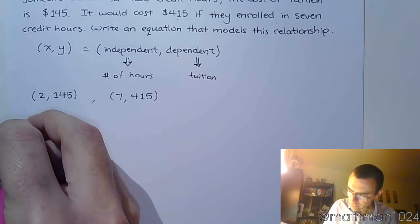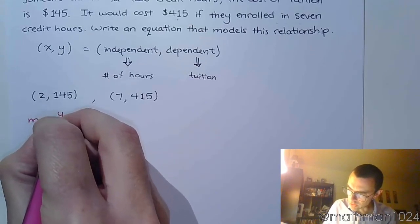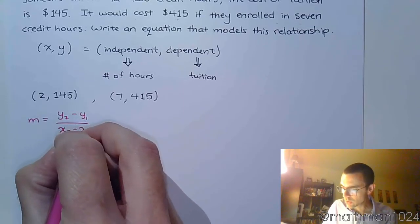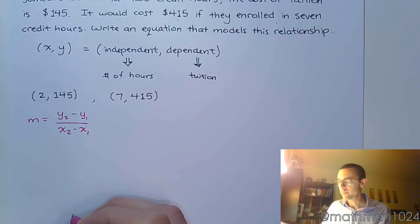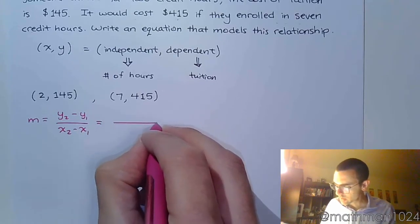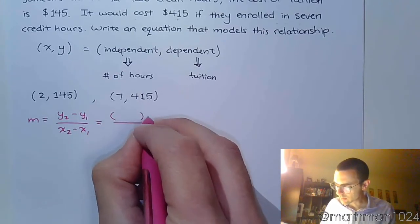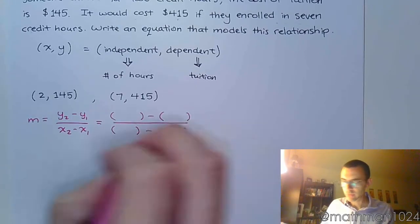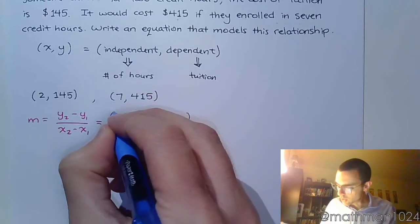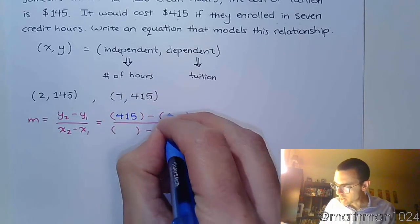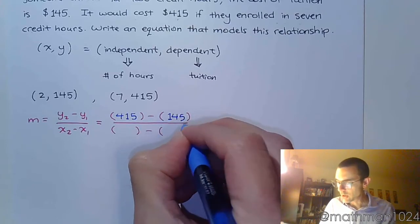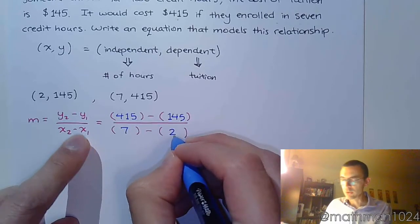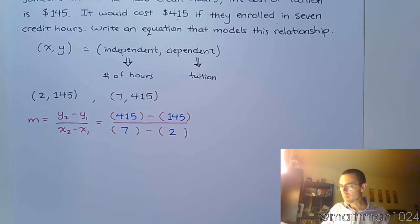My slope is y2 minus y1 over x2 minus x1. So let's write that out using parentheses correctly, just like we've talked about. So you have 415 minus 145 over x2 is 7, and x1 is 2.